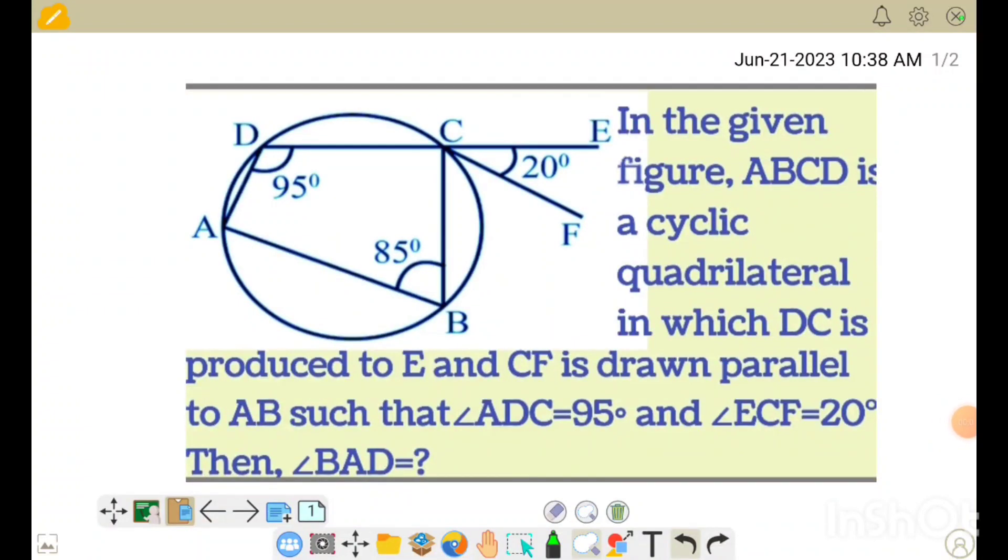Today I have taken a question in which it is given that ABCD is a cyclic quadrilateral and DC is produced to the point E and then CF is drawn which is parallel to line AB.